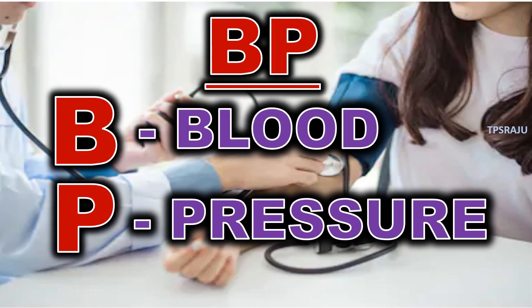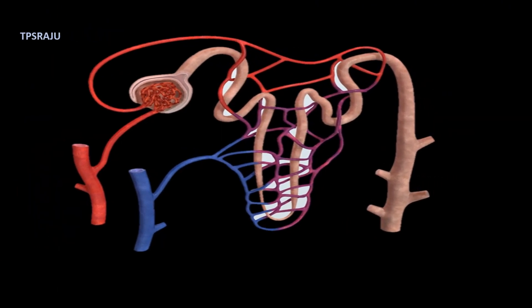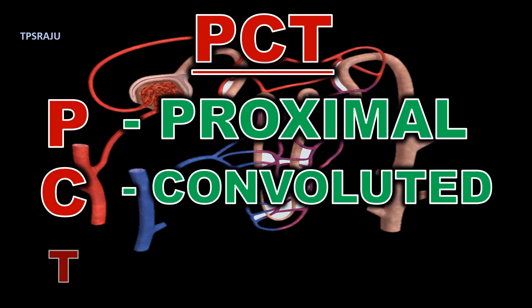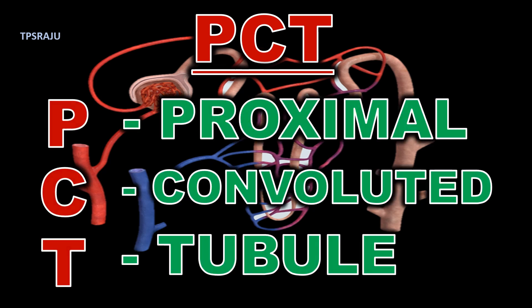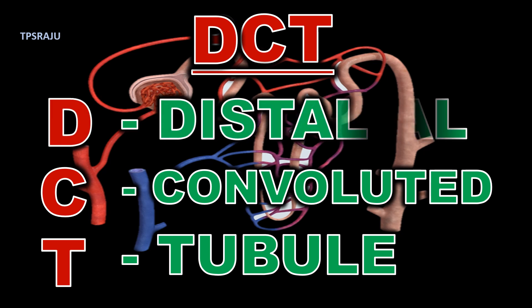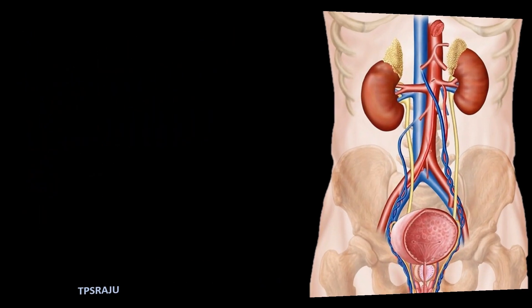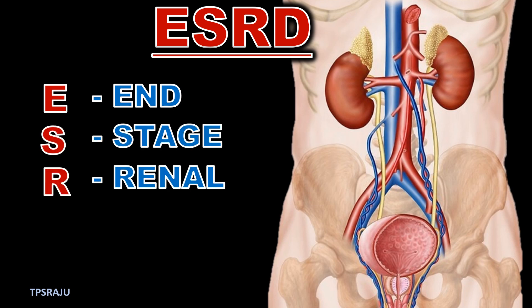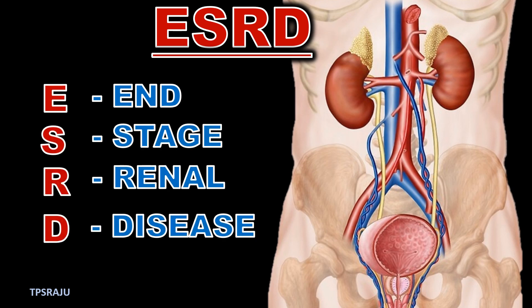BP — Blood Pressure. PCT — Proximal Convoluted Tubule. DCT — Distal Convoluted Tubule. ESRD — End-Stage Renal Disease.